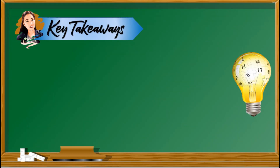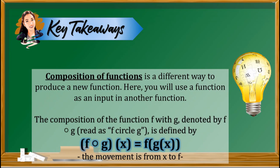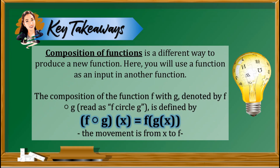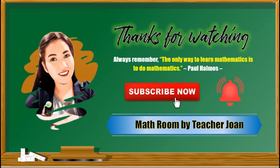Here are the key takeaways — the things you need to note about composition of functions. Composition of functions is a different way to produce a new function, where you use a function as an input in another function. To identify function composition, take note of the symbol f∘g(x), which is also equivalent to f(g(x)). The movement is from right going left — from x going to f. That's the end of our discussion on composition of functions. Thanks for watching, and I hope you have learned a lot in this video. If you are new to my channel, please don't forget to click the subscribe button and turn on the notification bell to be updated. Bye, everyone!